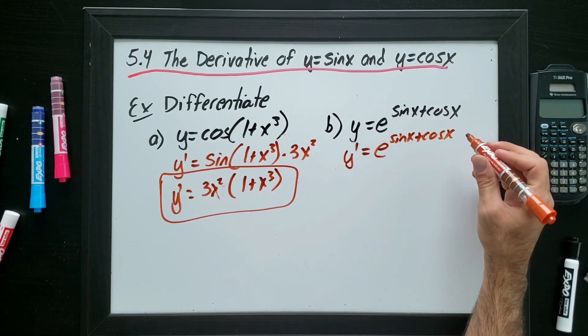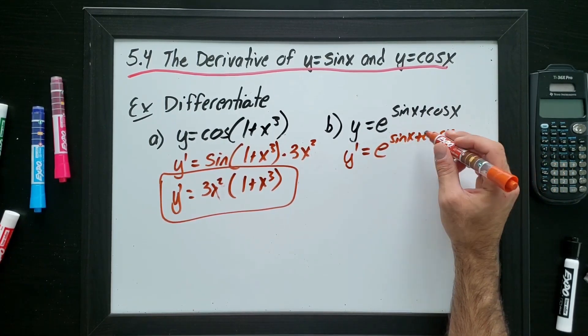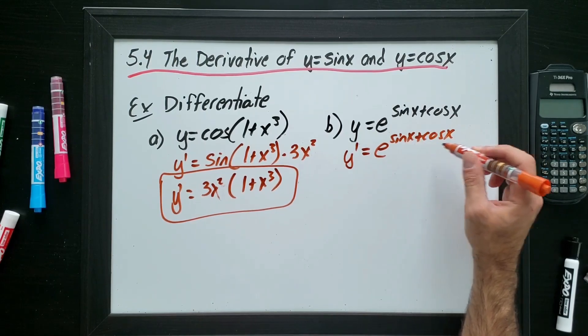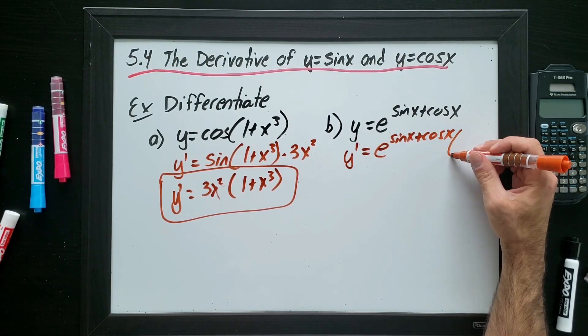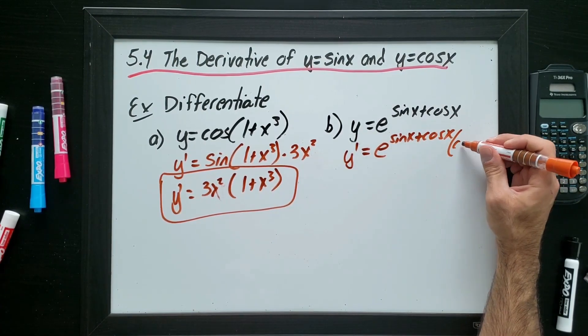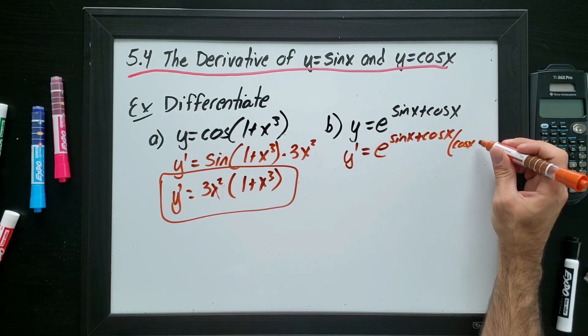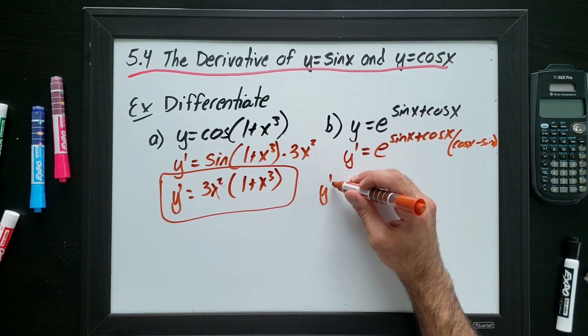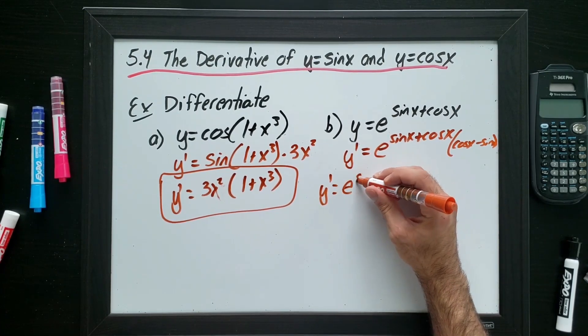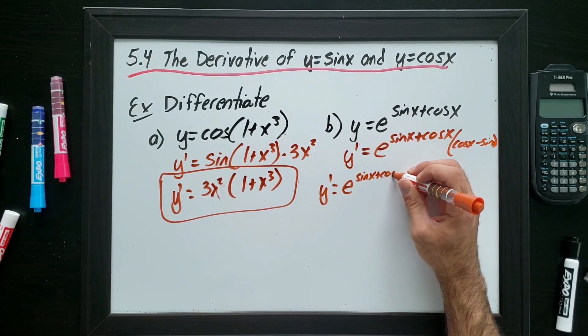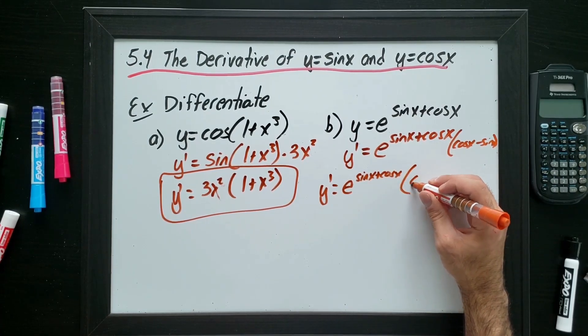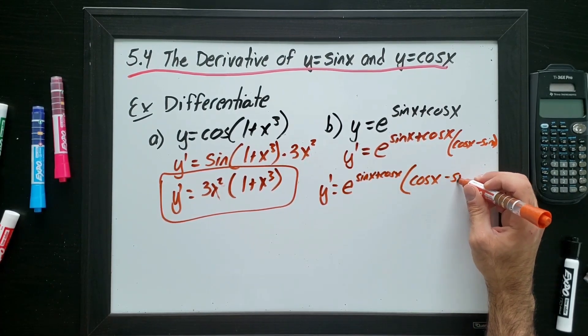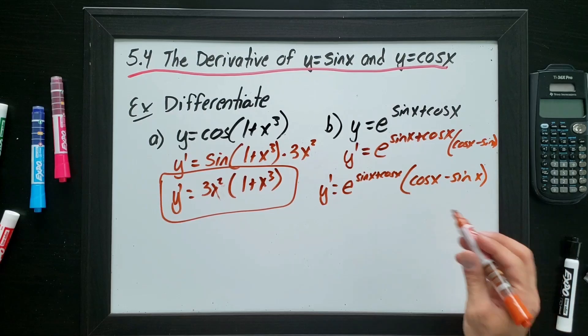And I have to multiply it by whatever is inside the function. So I have to find the derivative of sine x plus cos x. I'm going to multiply it right here. The derivative of sine x is cos x. The derivative of cos x is sine x. Running out of space there, so I'll conclude down here. So e to the sine x plus cos x times cos x minus sine x is my final answer.